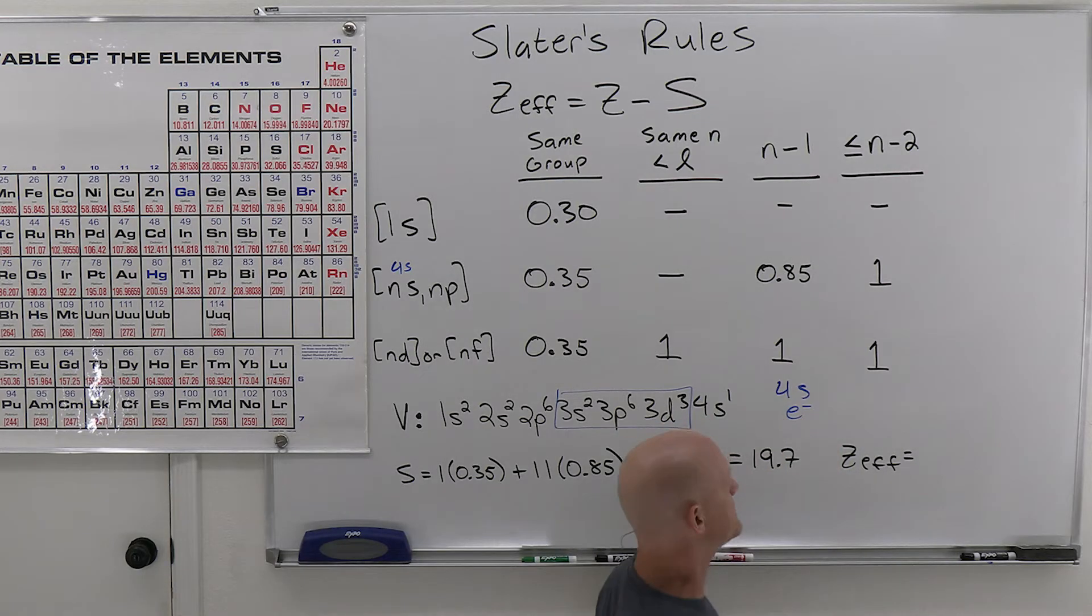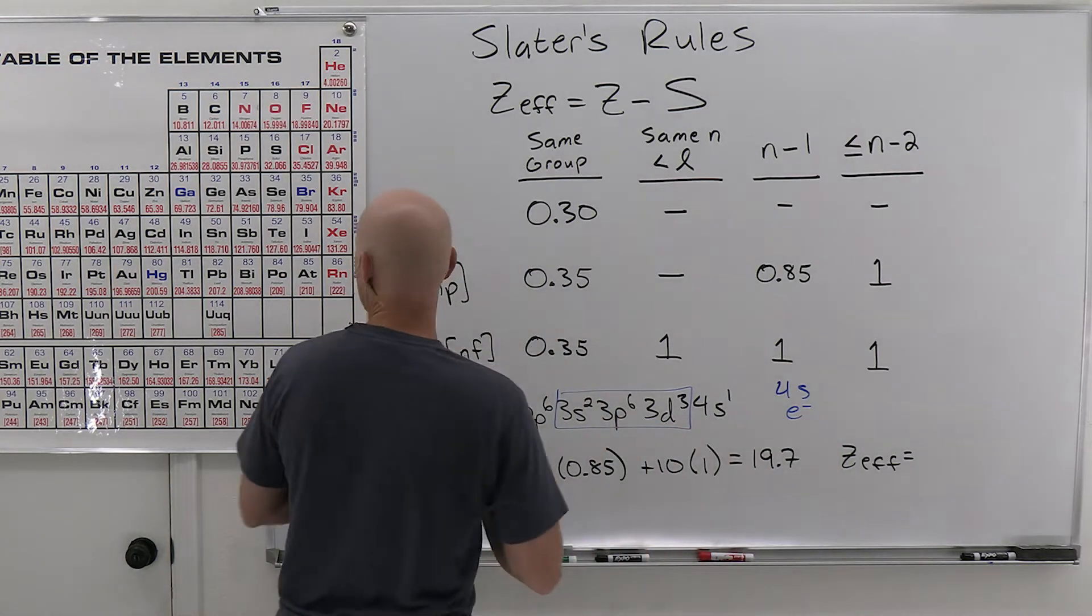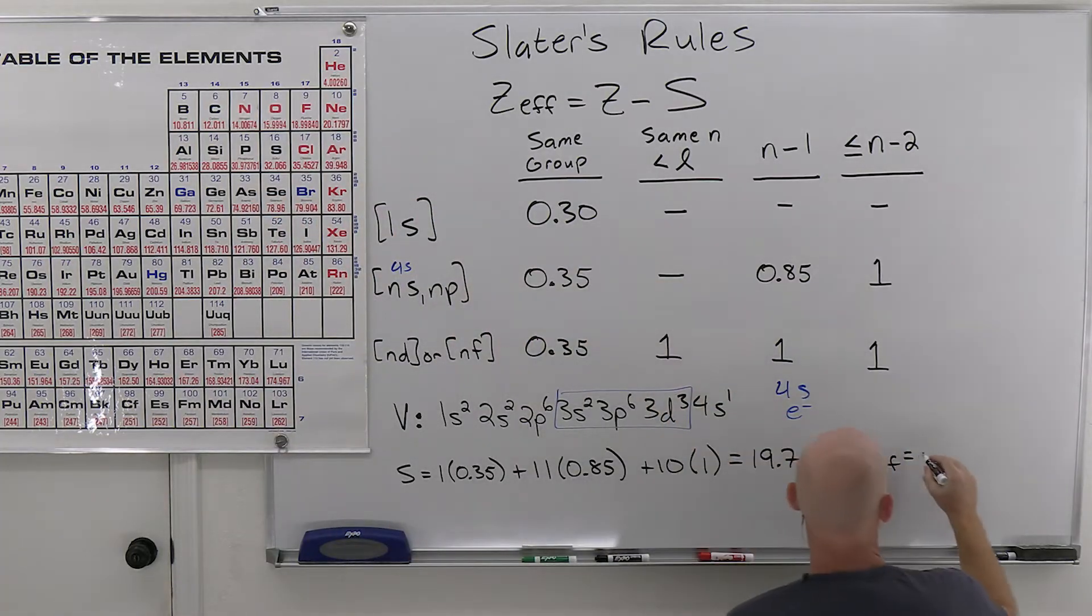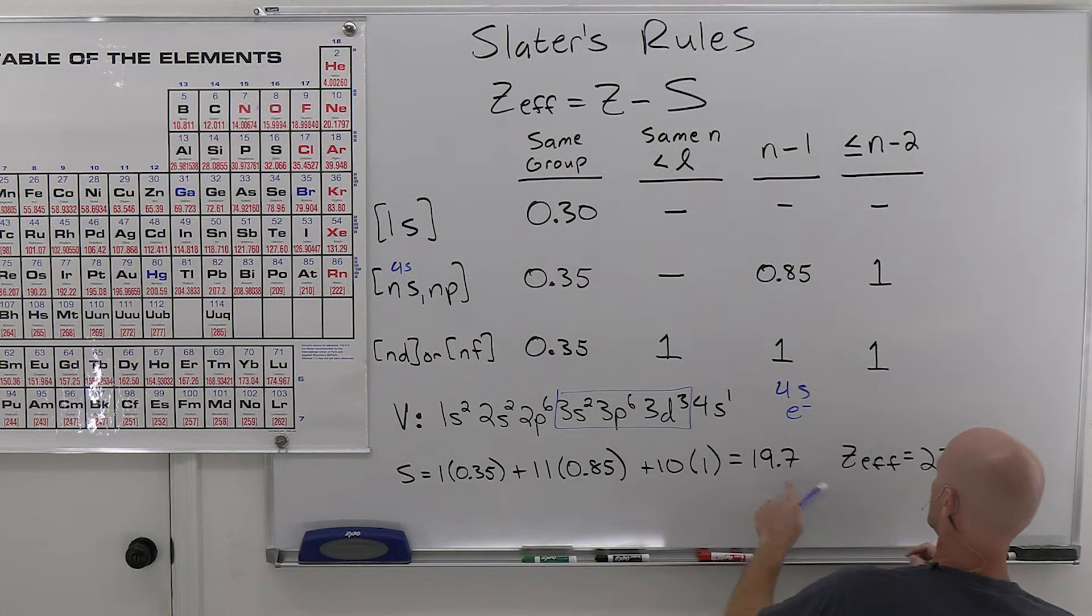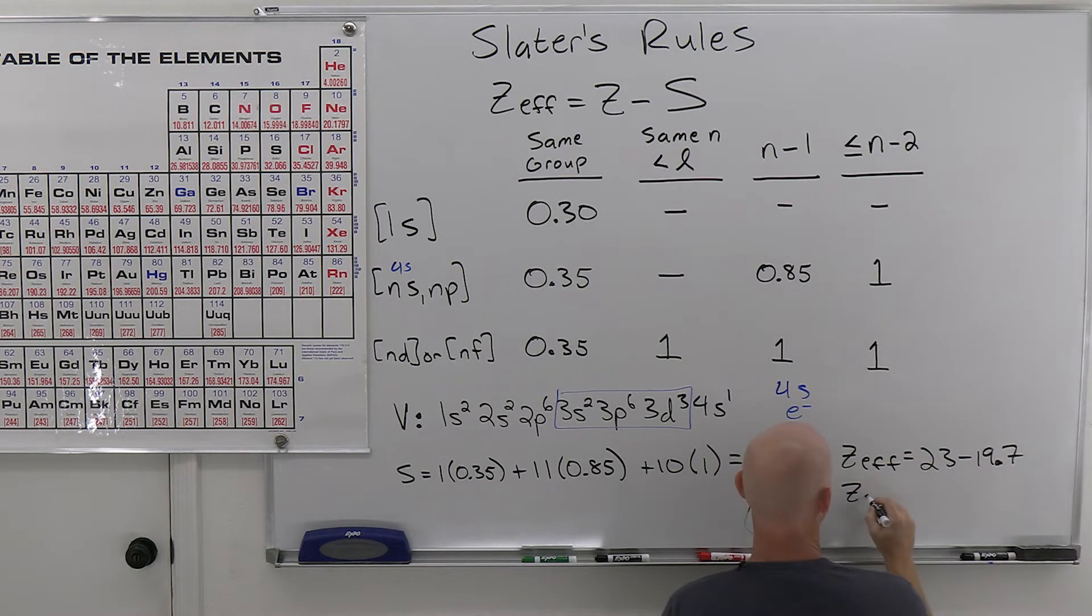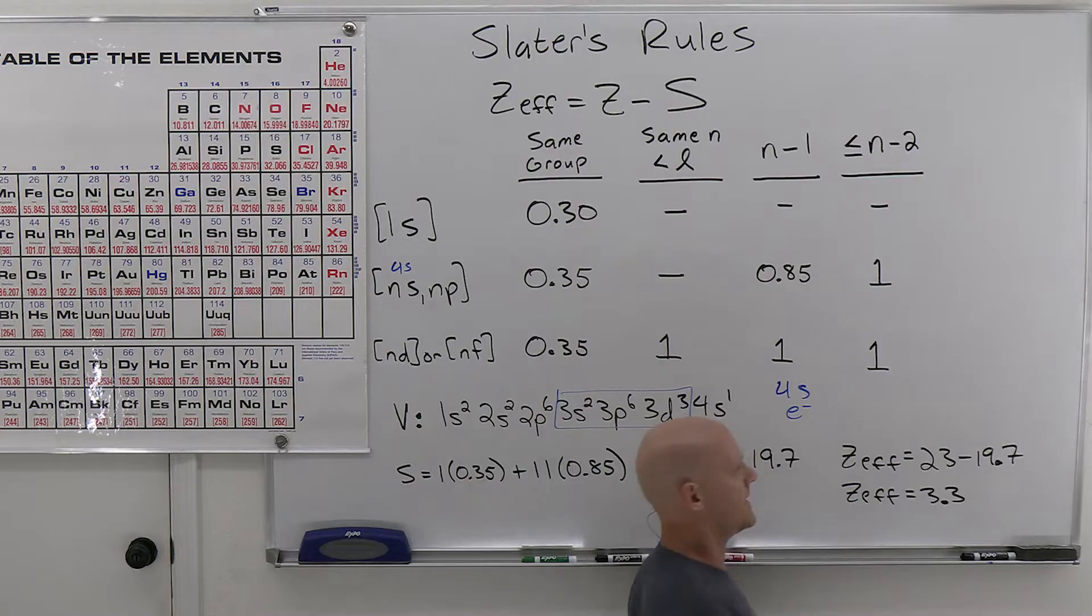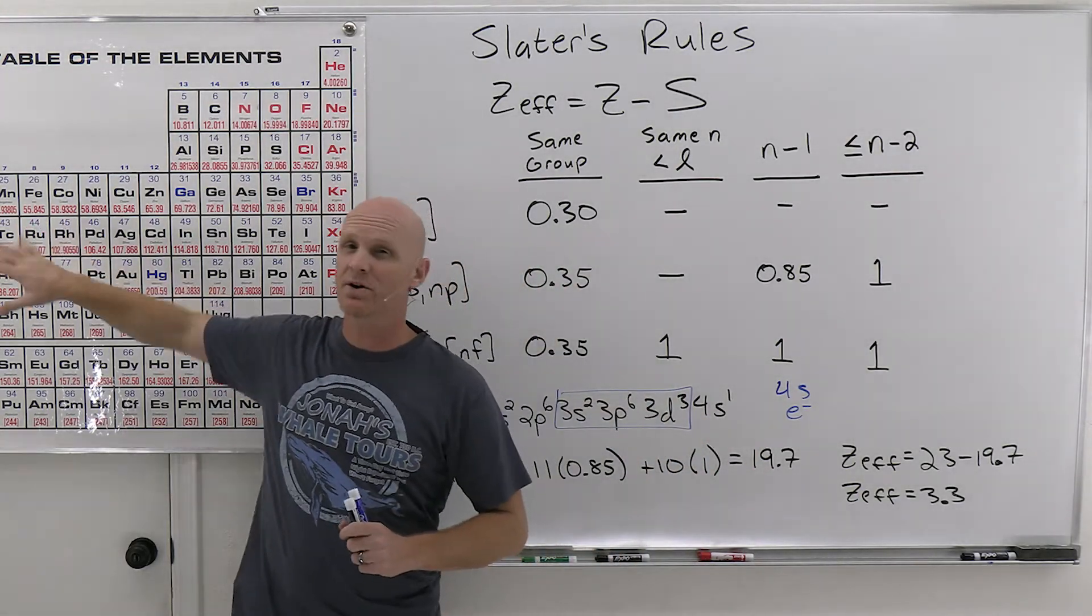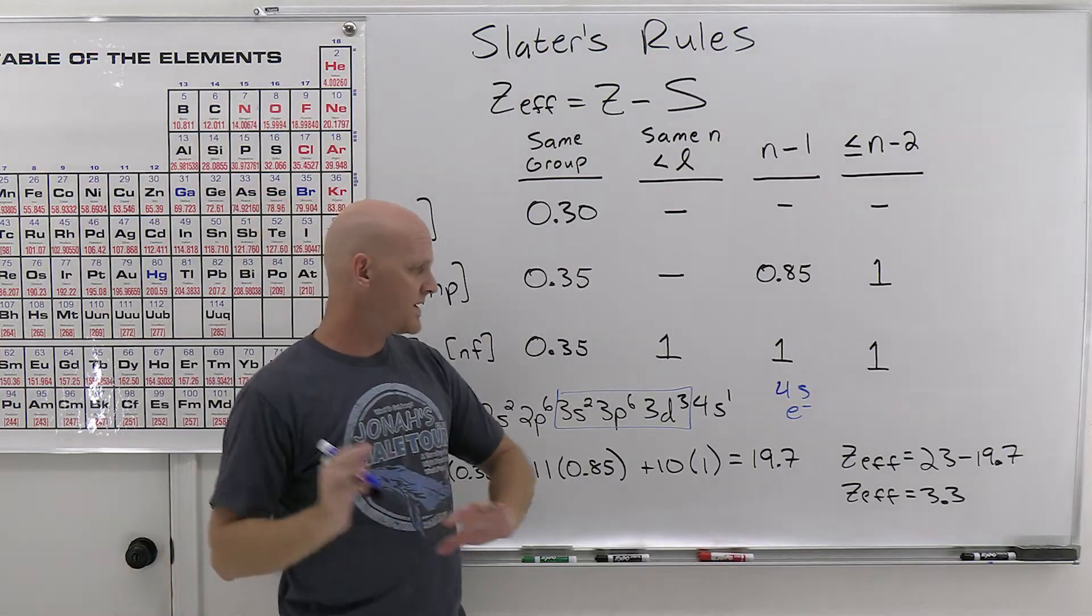And so we go to calculate our effective nuclear charge here. Again for vanadium, the atomic number is 23. So that's our Z value. And we see that our S value is 19.7. And so our Z effective here is going to equal 3.3. We don't really have anything to compare that to because we didn't really deal with the transition metals in the last lesson. Wasn't anything we need to be concerned with.